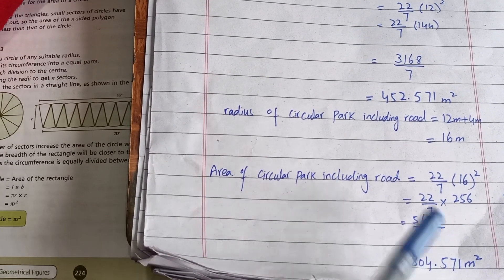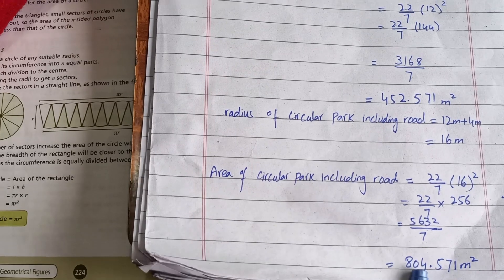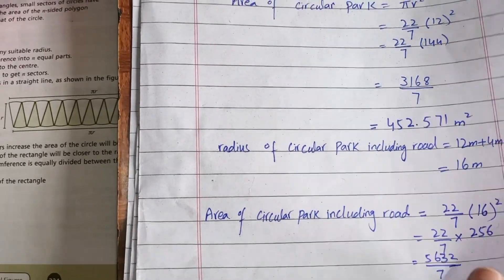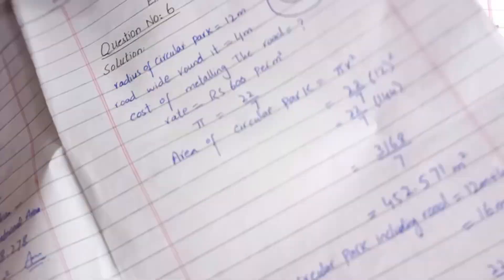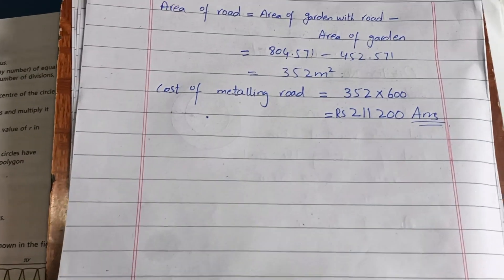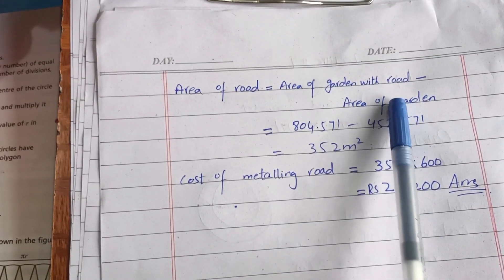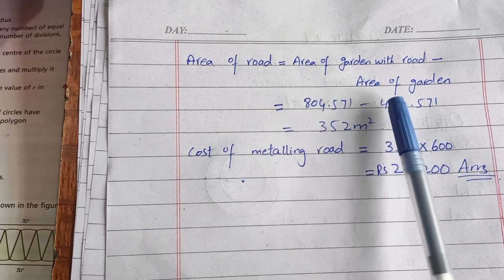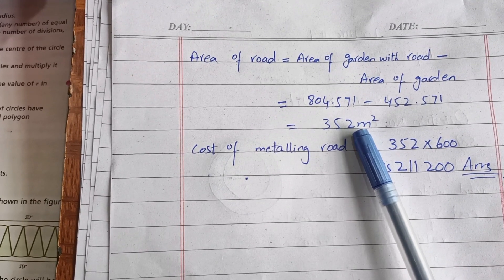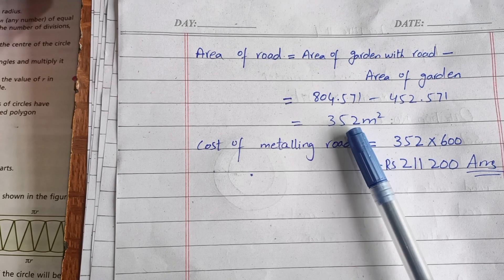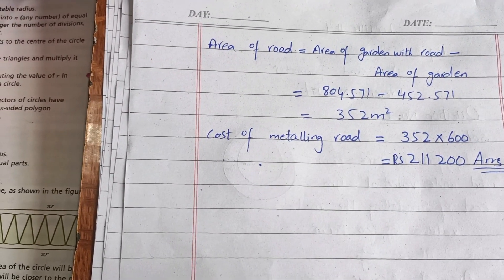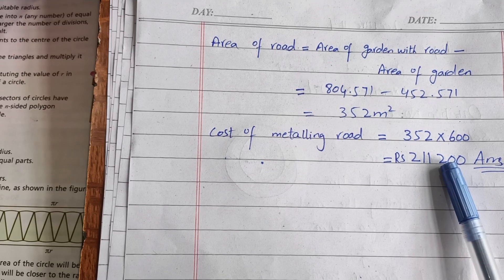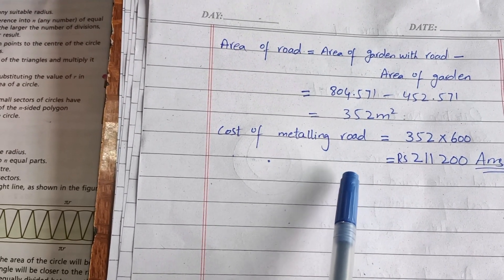Now we find the area of the road by subtracting: area of road = area with road − area of park = 804.571 − 452.571 = 352 square meters. We can now find the cost: 352 × 600 = 211,200 rupees. This is the cost of constructing the road. I hope you understand well.